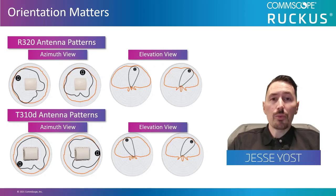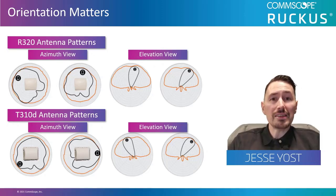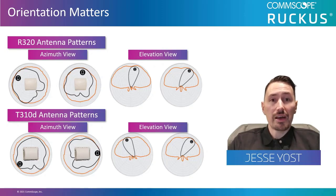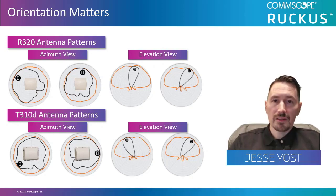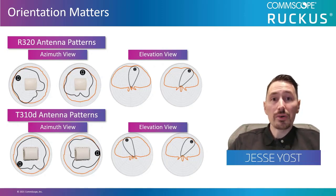Now that we've done that, we can see that this is a top-down view. If we were to place the AP flat on a table, serial number side down, and stand over it and look down at it, this is the view that we'd have. So what the orange line is telling us in the azimuth view is that we're emitting a 360-degree radio pattern around the AP.